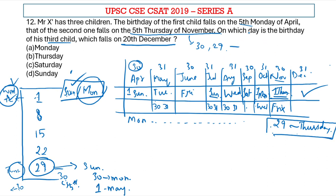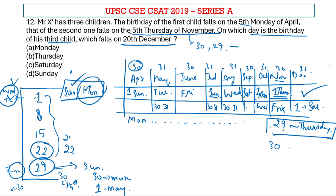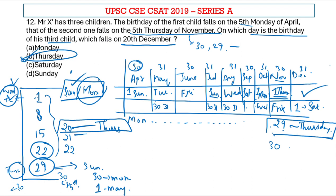Now it is easy to calculate the birthday of the 3rd child on 20th December. If 29th of November is Thursday, then 30th of November is Friday, so 1st of December is Saturday. If 1st of December is Saturday, then 22nd of December is also a Saturday, which means 21st is Friday and 20th is Thursday. Therefore, 20th of December is a Thursday — so option B is the right answer.